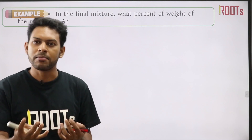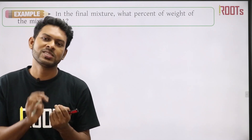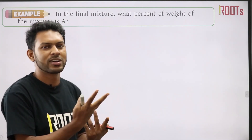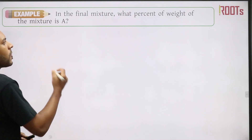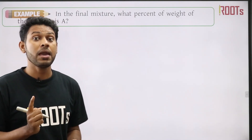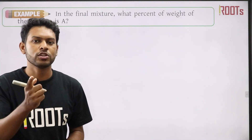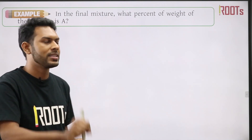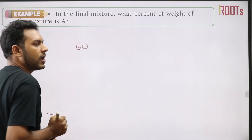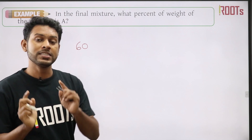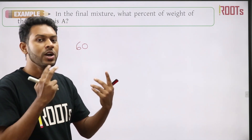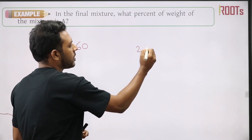Spider has 8 legs, but we use it a number of times. What we have to do is write the numbers. A is the first number — that is 60%. And B is the second number — that is 25%. The mixed result percentage is 50.